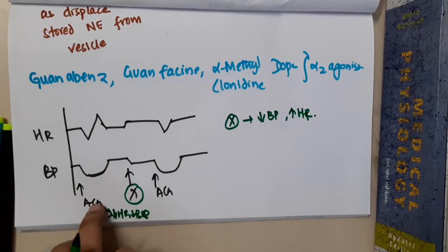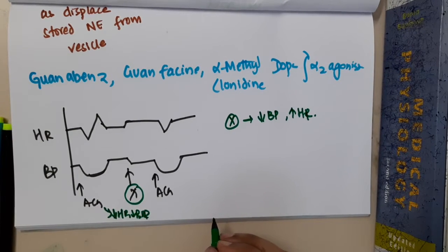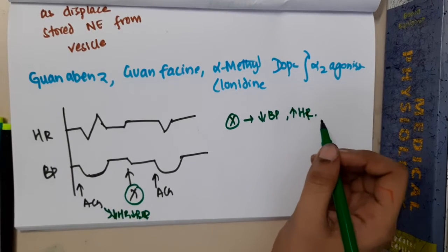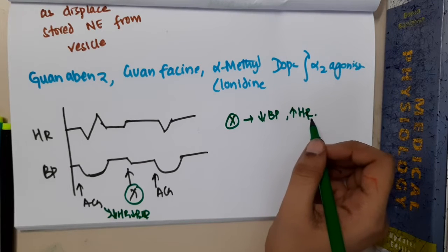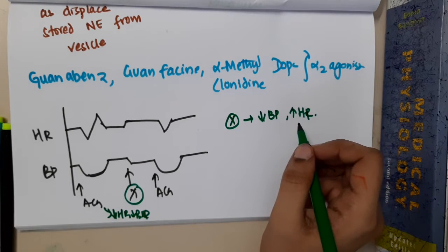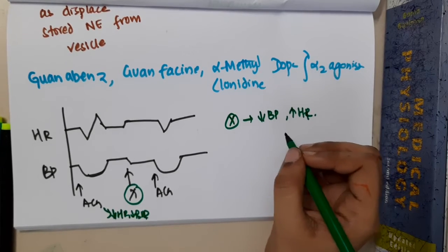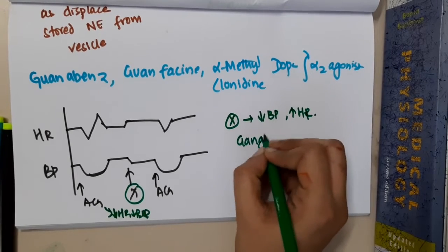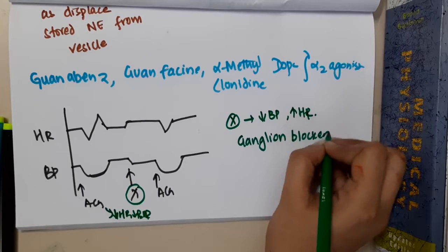So this is antagonizing the effect of acetylcholine, but this is not atropine because atropine does not have these actions. So this is actually a ganglion blocker.